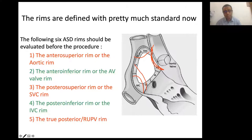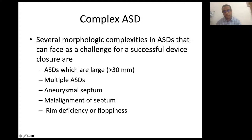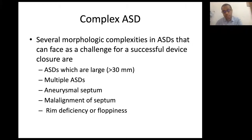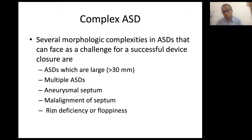With the rim definitions established, let us consider the morphological complexities that can challenge ASD intervention. These include large ASDs — greater than or equal to 30 mm in an adult or more than 20 mm in a child — multiplicity of defects, aneurysmal septum, malalignment of the septum, and rim deficiency or so-called floppiness of the septal margins.